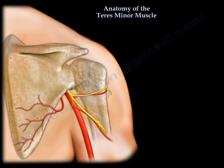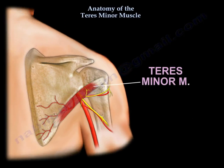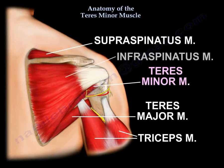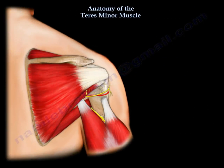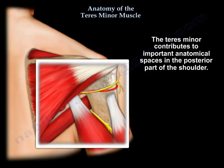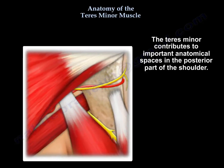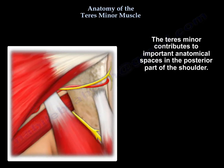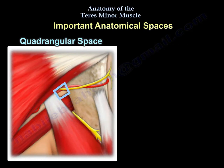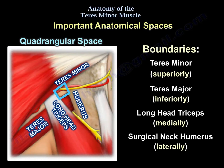There are a lot of muscles around the shoulder area, as you can see here. The Teres Minor contributes to important anatomical spaces in the posterior part of the shoulder, such as the quadrangular space.